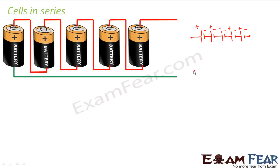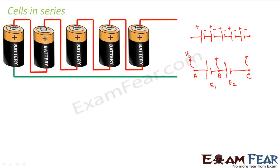To calculate that, we assume just 2 cells for now. Let us suppose the first cell has an EMF of E1 and the second one has an EMF of E2. Let us say this is point A, this point is point B, and this point is point C. We say that the potential at these 3 points A, B, and C are VA, VB, and VC. So the potential at each of these points is different. Now for the first cell with EMF E1, let us write the expression for potential difference between these two points.